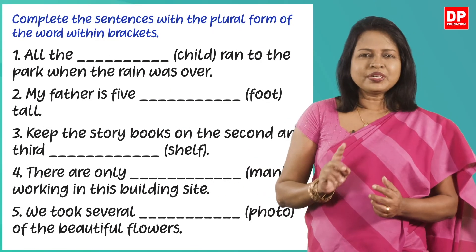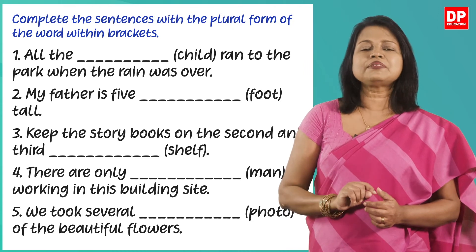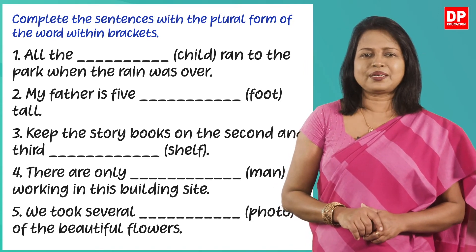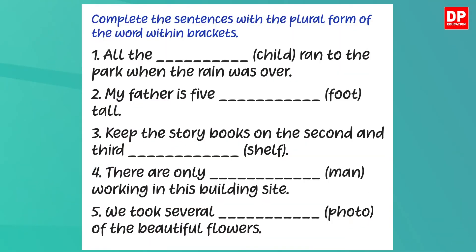Let's do an activity to practice what you have learnt so far. You have to fill in the blanks of these five sentences with the plural form of the word given within brackets. You can pause the video and do it now. Let's check the first sentence: 'All the ___ (child) ran to the park when the rain was over.' You have to fill the blank with the plural form of child. To form the plural, you have to change the spelling. It's children.